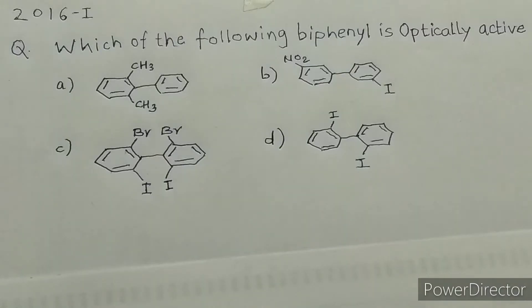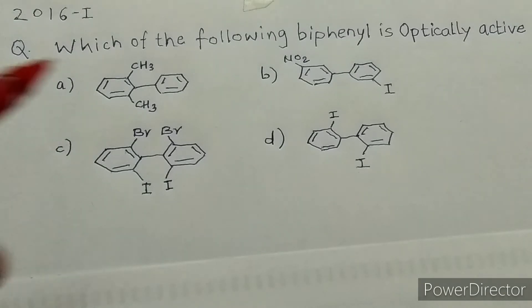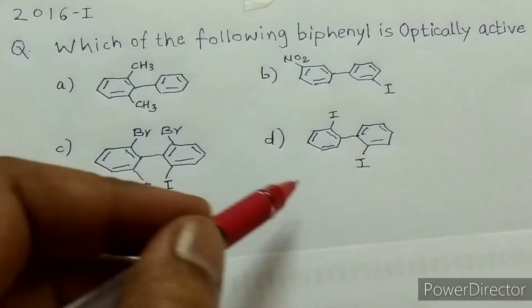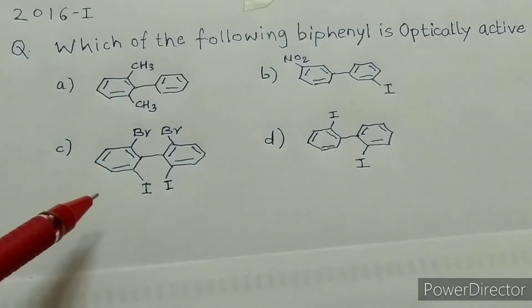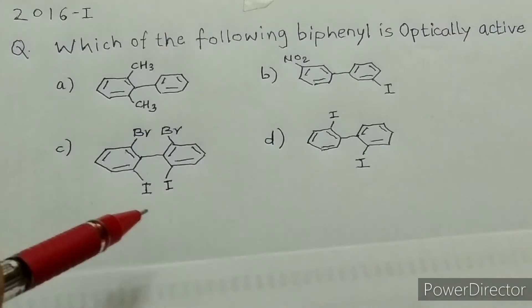Hello friends. In this video we will look at previous year NEET questions on Haloalkanes and Haloarenes — specifically important questions that appeared in NEET. Here we go. The 2016 NEET exam question asks: which of the following biphenyls is optically active? They have given four biphenyl structures, and we have to find out which biphenyl is optically active.